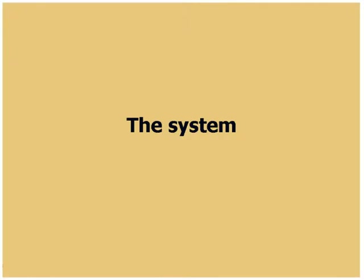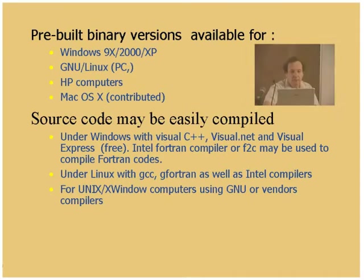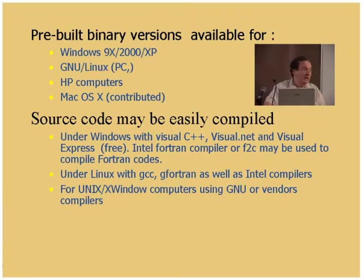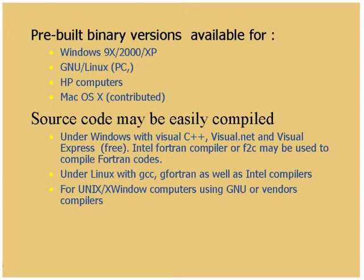There are pre-built binary versions available on the Scilab website for Windows systems, GNU/Linux systems, HP computers, and also a contributed version for Mac OS X. For other systems, if you want to customize your Scilab, it's also possible to rebuild it directly from the source, as it is given as open source software. Under Windows, this can be done using the Microsoft compilers, including Visual Express, which is free. So you are not obliged to pay a license to Microsoft to compile Scilab.